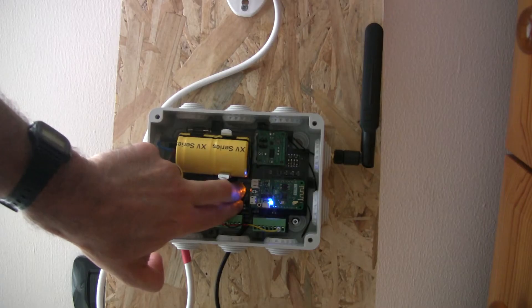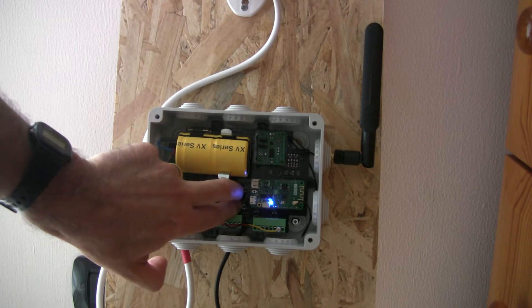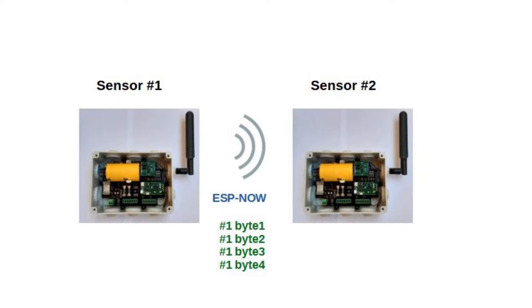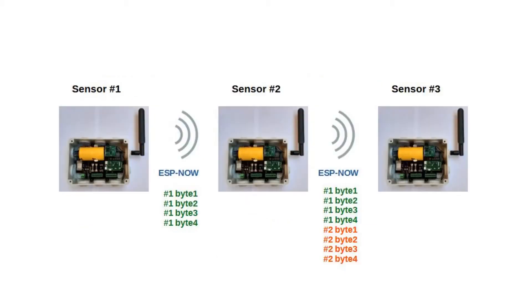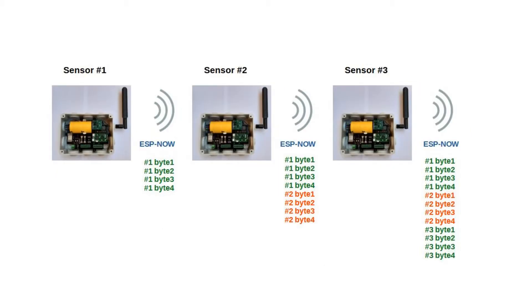Each sensor module has a specific address that can be programmed by the user using the buttons on the module's electronic board. The first sensor module transmits its data via 4 bytes to the second module every 30 seconds. Each module receives the data of the previous modules and retransmits them to the next module, adding its own 4 bytes.